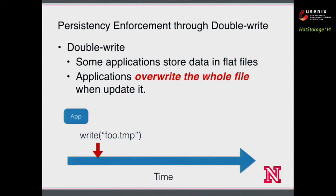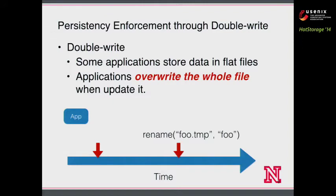Some applications manage their own data in flat files. When an application updates a file, it has to override the whole file to ensure the update is atomic. For example, when an application tries to modify file foo, it writes the whole content to a temporary file called foo.temp, then renames it to foo. This is similar to logging — it performs out-of-place updates — but is even more inefficient because it induces a lot of redundant writes. Even unmodified parts have to be written to flash storage.